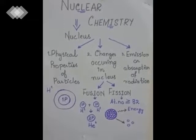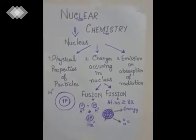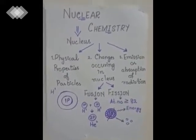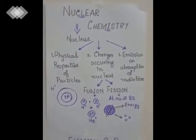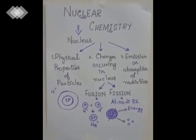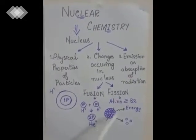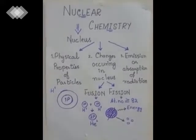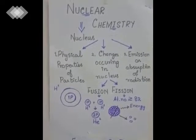That combination is the reason the sun gives off heat. The second change is fission, which means breakdown. Elements whose atomic number is equal to or greater than 82 can undergo fission, meaning they can break down spontaneously. That breakdown also releases energy, and emission of radiation occurs. This spontaneous breakdown of elements is called fission.